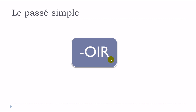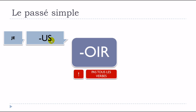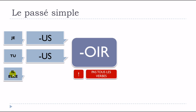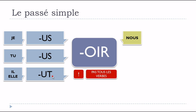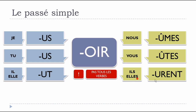Next, verbs ending with OIR — but remember, not all of them, most of them. The endings go: je US, tu US, il/elle UT, nous Û-M-E-S, vous Û-T-E-S, ils/elles U-R-E-N-T. Keep in mind these endings: US, US, UT, Û-M-E-S, Û-T-E-S, U-R-E-N-T.